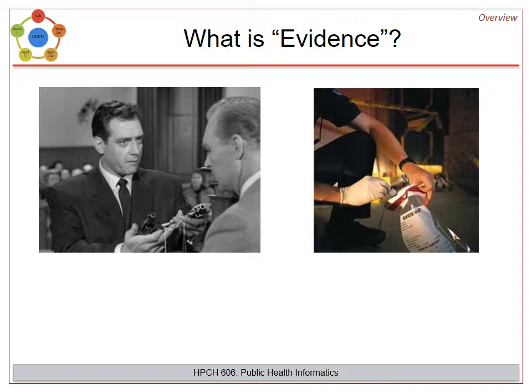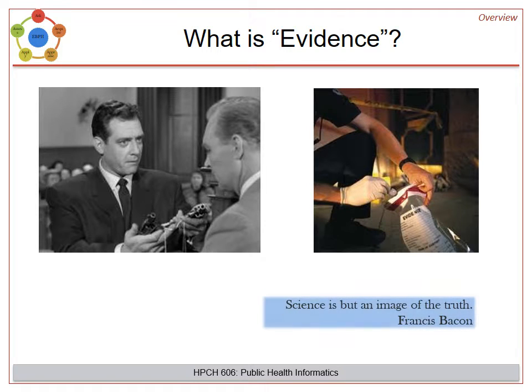First, let's consider the question: what is evidence? Perhaps when you think of evidence, you may think of a criminal investigation. Can you identify the character in the left-hand picture? What do criminal investigations and public health have to do with each other? We can think of it this way: for either to go forward, each relies on a special kind of information called evidence.